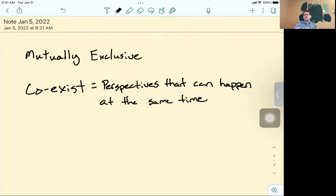They can happen at the same time and they don't fight with each other. Does that make sense? Are there questions or ways I could explain this a little differently? Okay, take a moment please and write down this short definition in your notebook. Coexist means that they are perspectives that can happen at the same time.